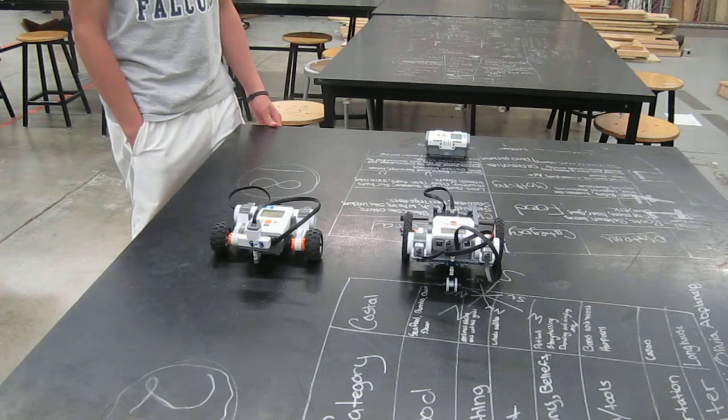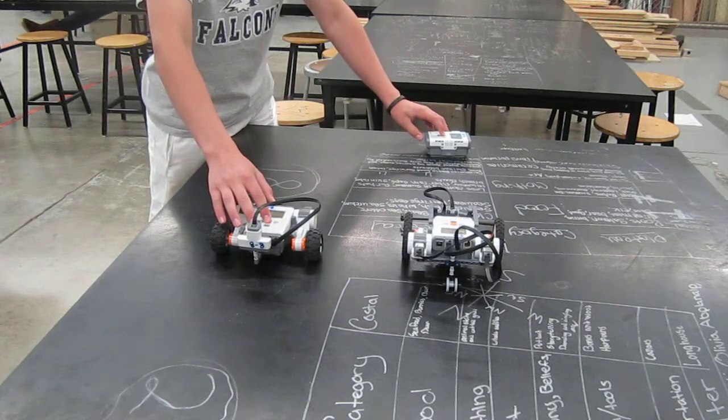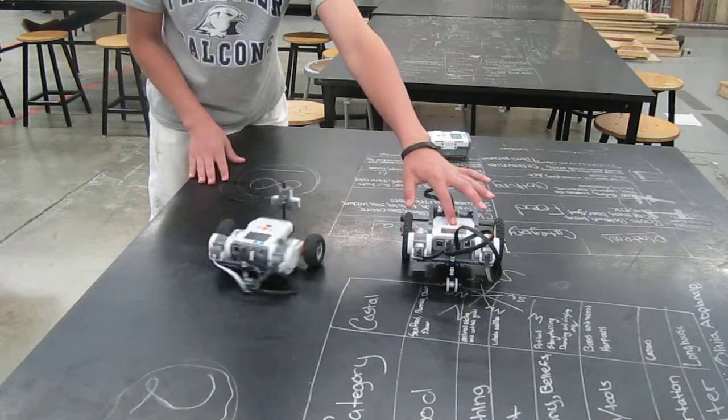If he dances well, then the master says yes and the helper robot takes the master back to his chamber. If he dances badly, then the master says no and the helper robot pushes the dancer off the edge of the dance floor.